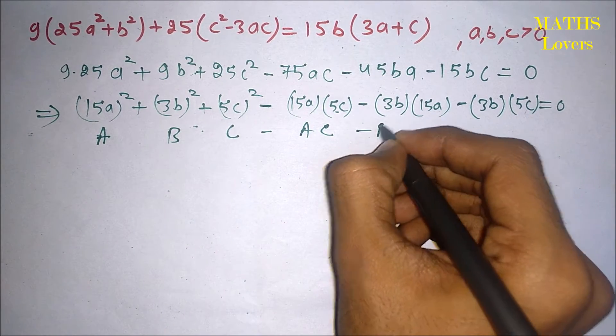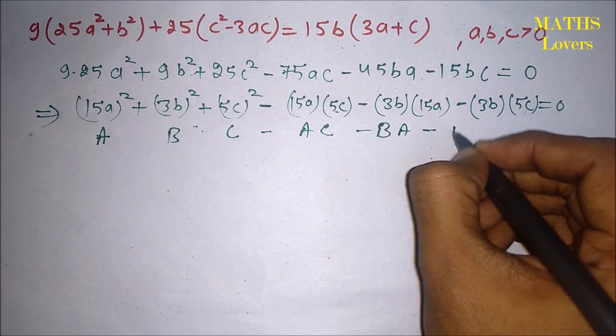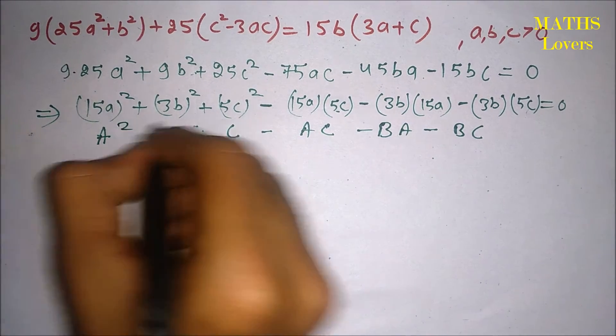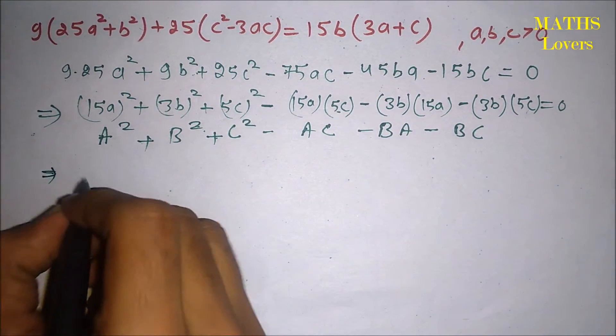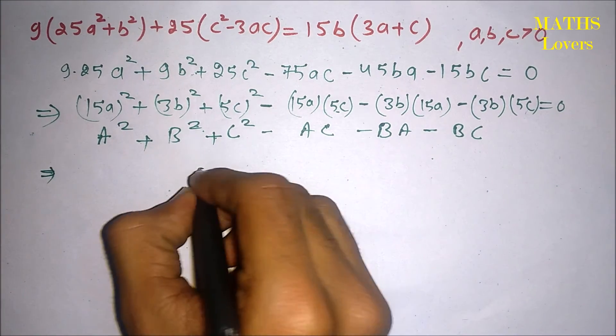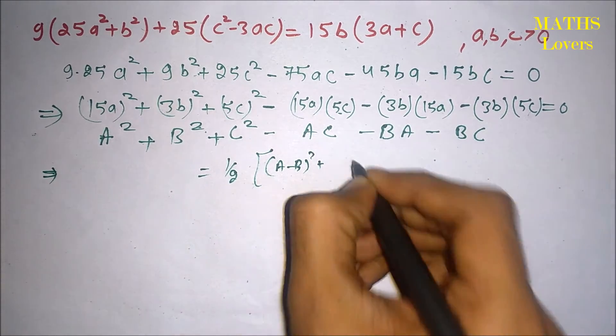B² plus C² minus AC minus BA minus BC. So A² B² plus C² it is like this. So if you know the formula of this, this is equal to half of (A minus B)² plus (B